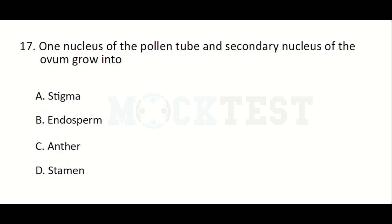One nucleus of the pollen tube and the secondary nucleus of the ovum grow into endosperm.